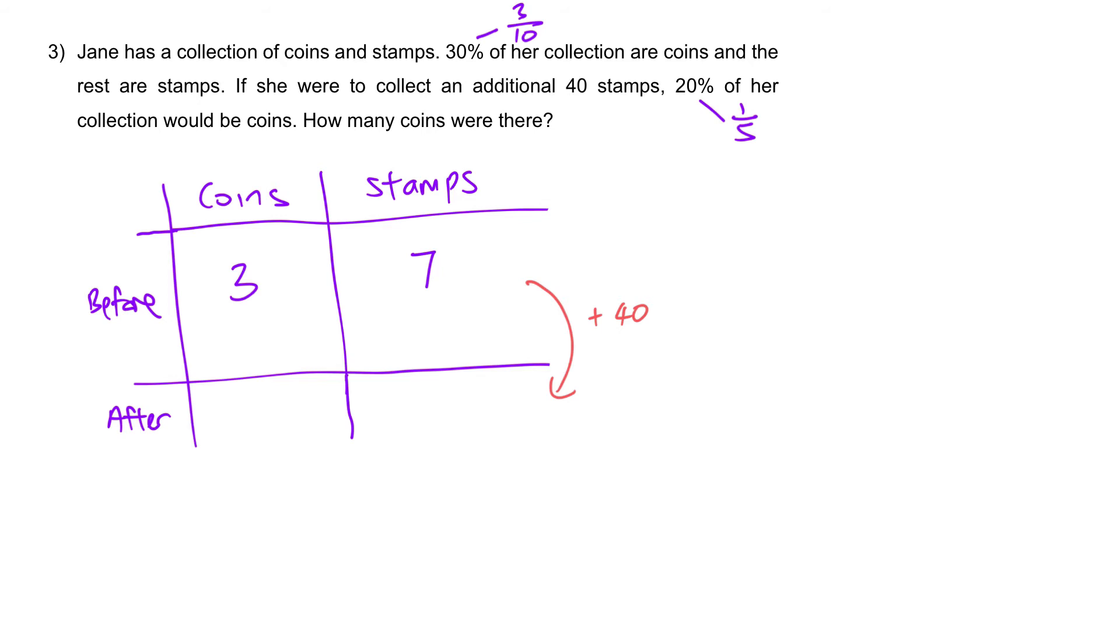What happens to the ratio? It became 1 is to 4, because the total is 5. Given that at the end, only 1 unit out of the 5 are coins, the remaining 4 units will be stamps. However, as we mentioned earlier, the number of coins stays the same. So how can this 3 units and this 1 unit be equal to each other? In model form, it's just saying that the 3 units here, and the 1 unit here, they are actually the same.